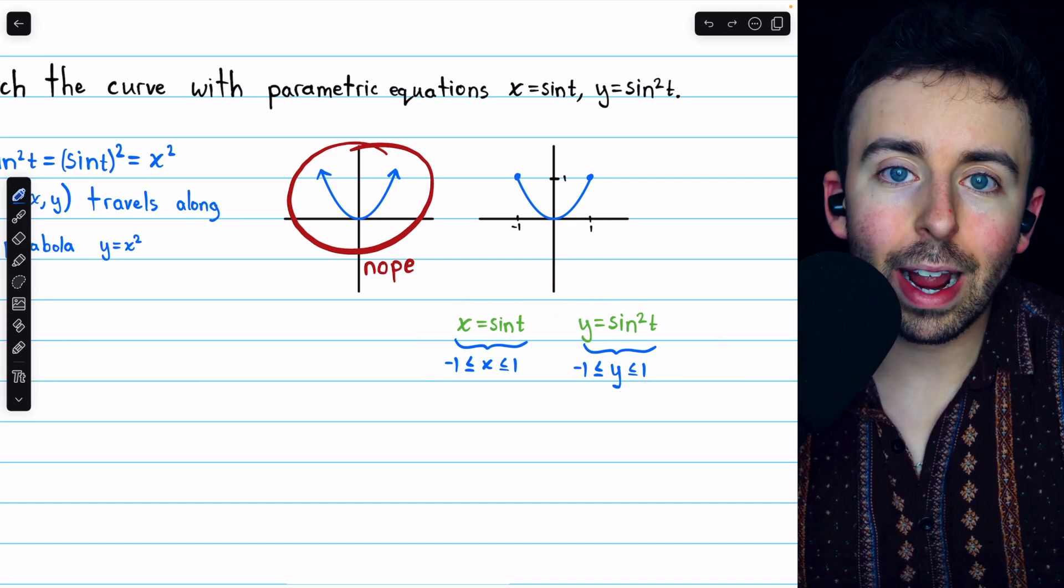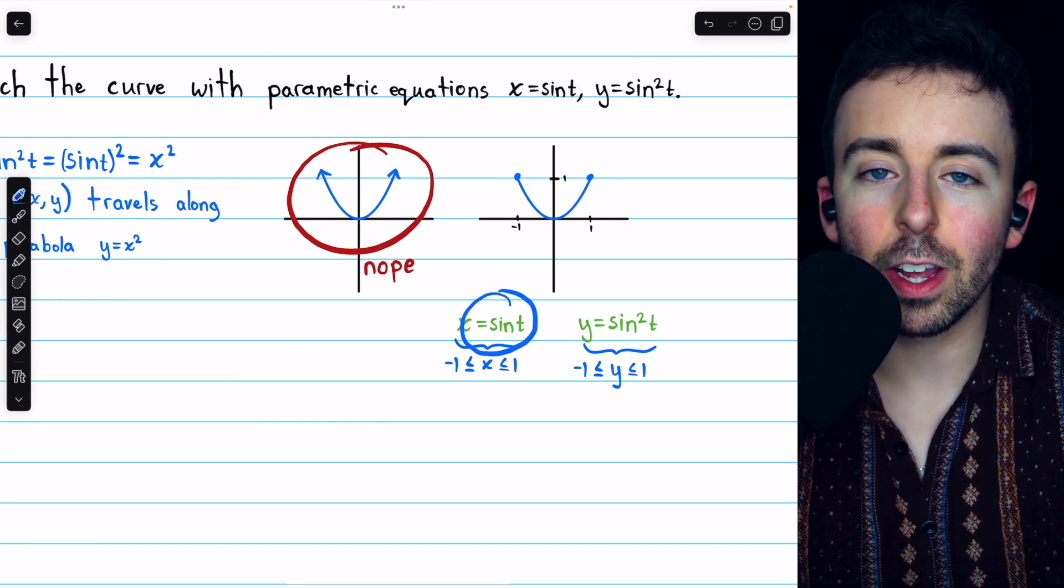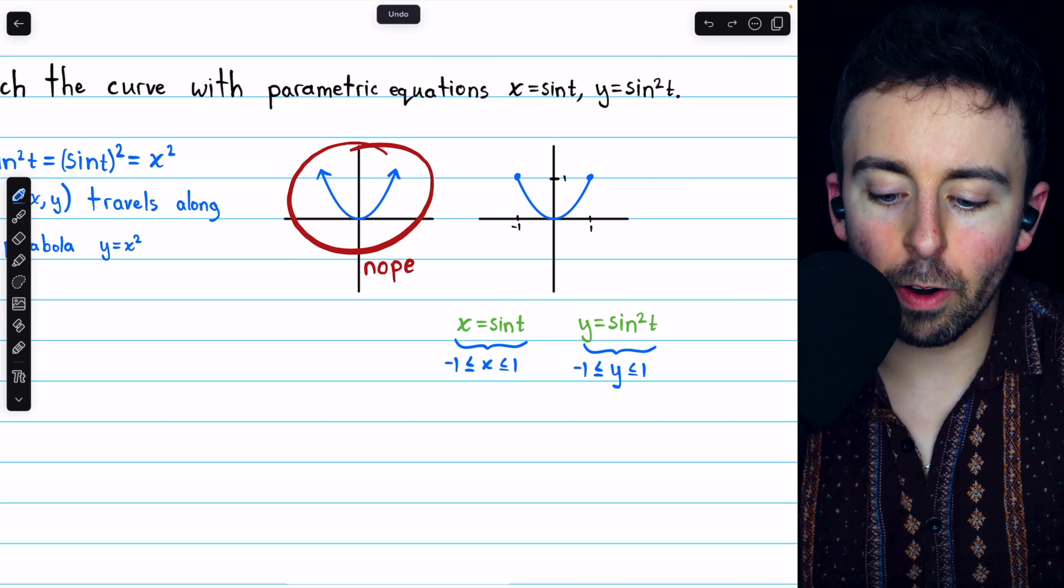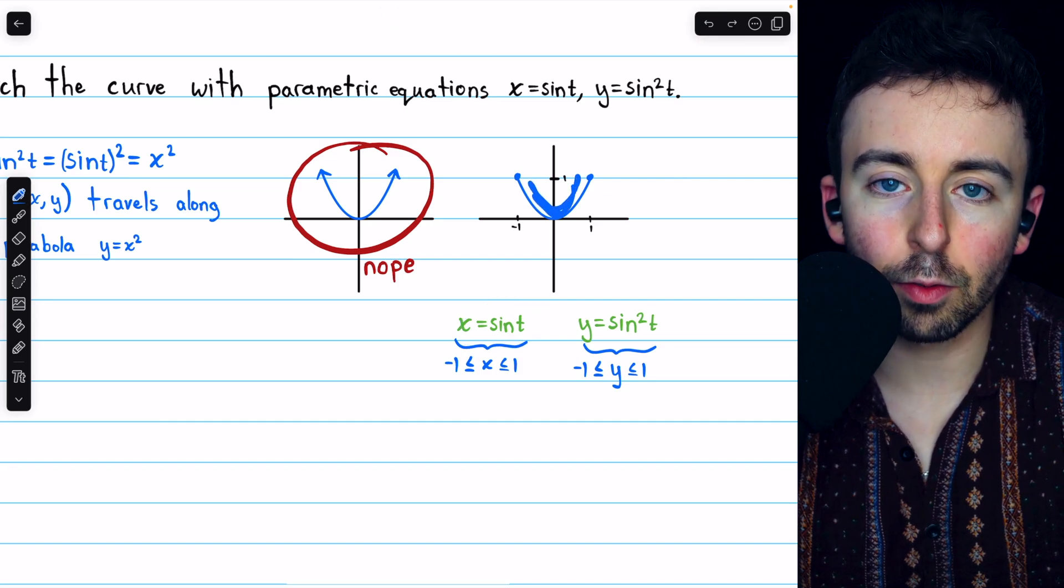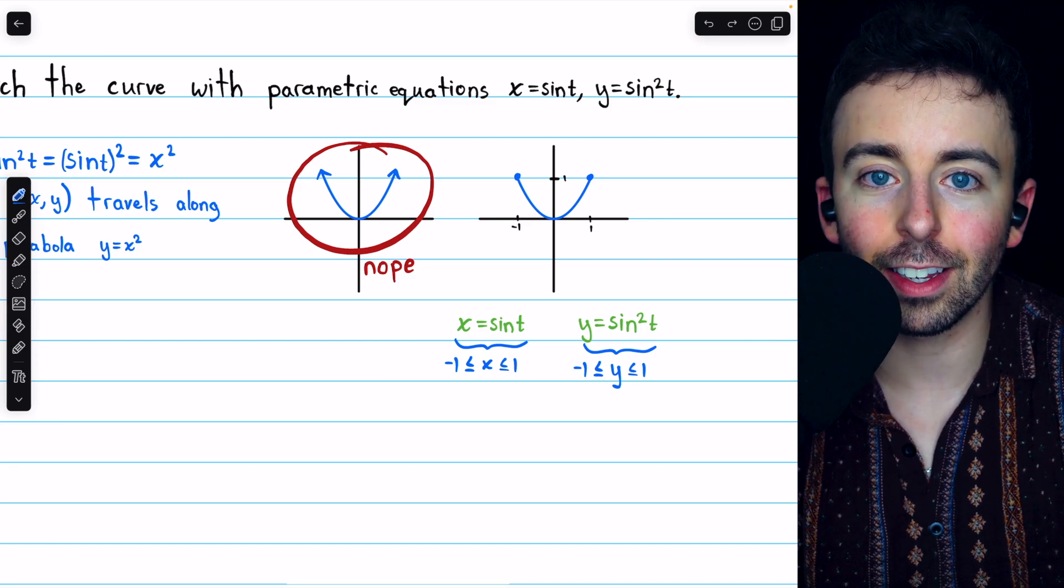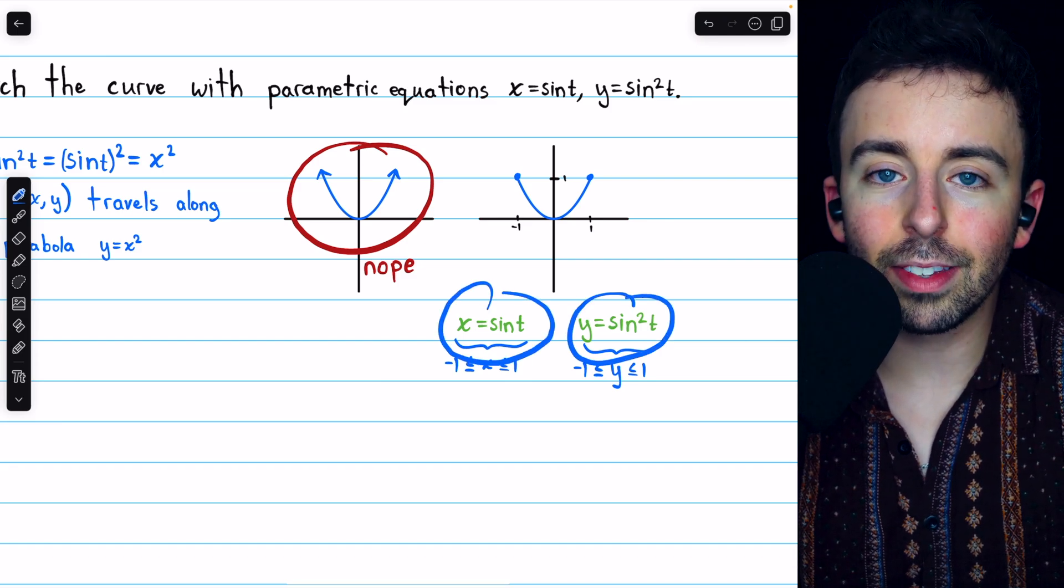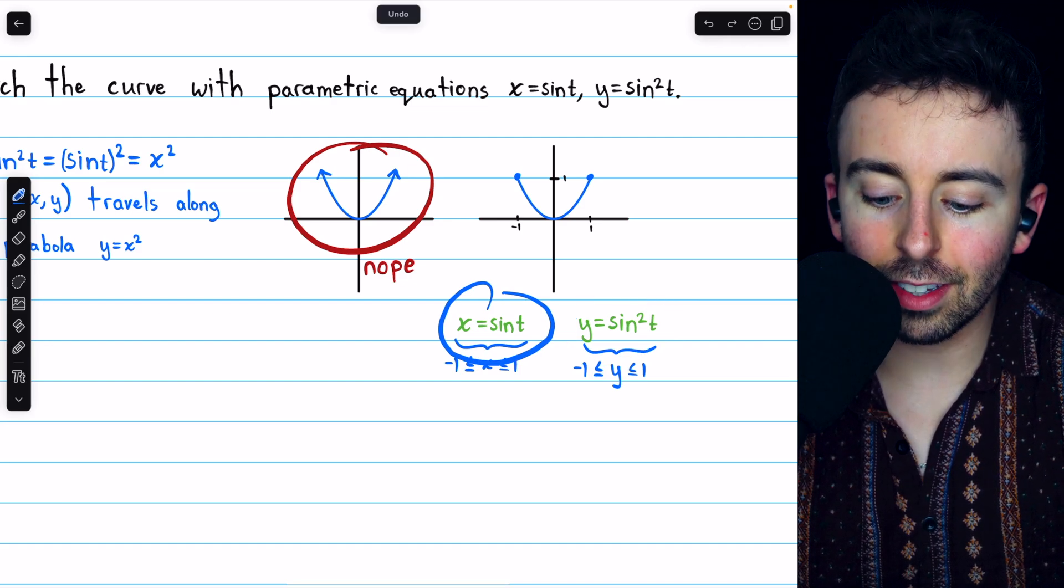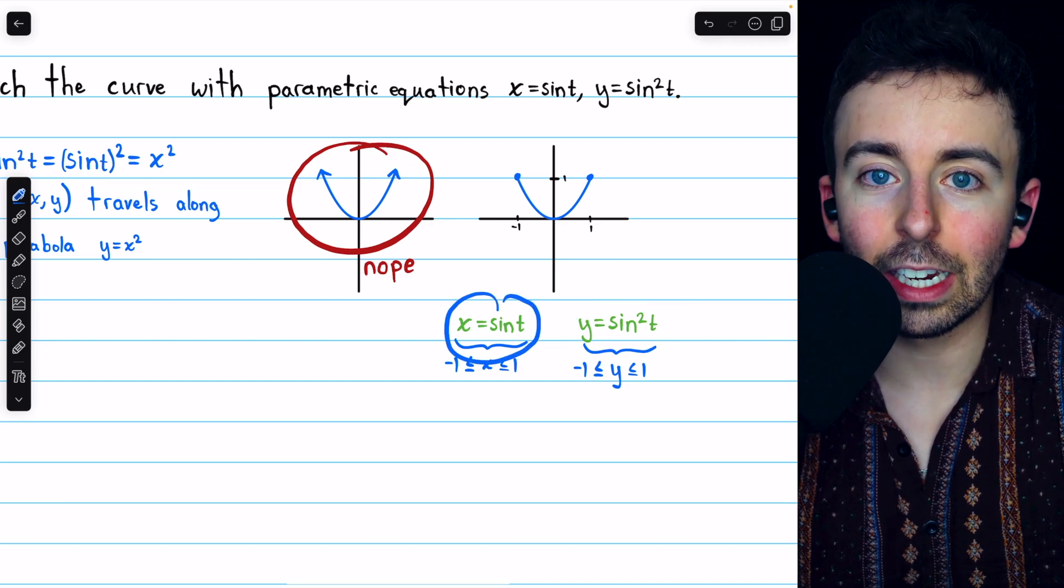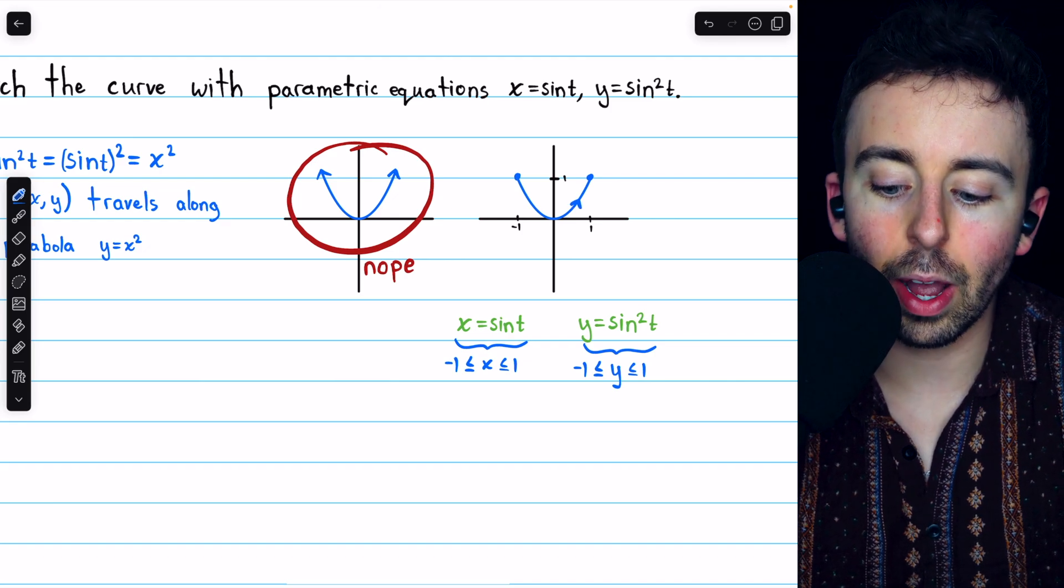Now, as for the direction that a particle on this curve would travel, sine t is a periodic function. So, the particle will go back and forth on this curve infinitely as t increases. But when t equals 0, x and y will both be 0, and then as t increases, x initially will increase also. So, the starting direction is that way, towards positive 1.